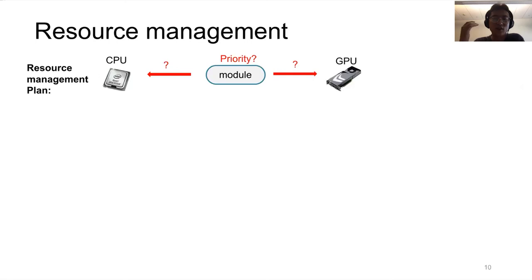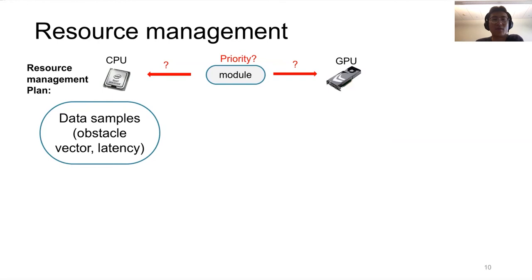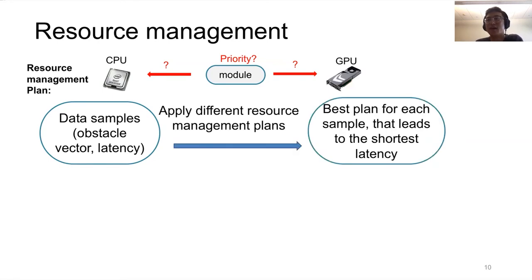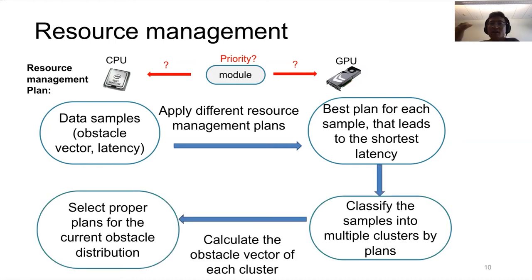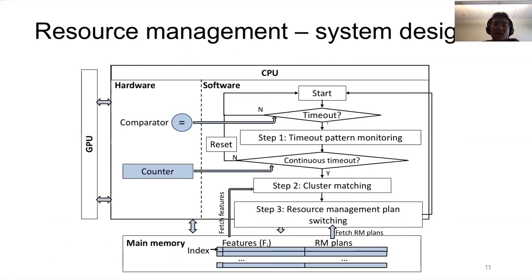This latency model builds the connection between obstacles and perception latency. Next, I'll explain how to use this latency model to optimize system performance. For each given obstacle distribution, we assign a resource management plan. The plan decides the priority of executing each module. We can also drop some distant obstacle checking information if some obstacles are far away from the car. For each class of obstacle distribution, we assign the best resource management plan to achieve the lowest latency.